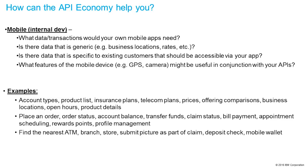When we think about customer-specific information, it might be placing an order — what is the order status? Or what's their account balance at the bank, and do they want to transfer funds? All these things have to do with individual customers, and we need to qualify who they are, secure that, and make sure they're only seeing their own information. Using the mobile device with the APIs, we might find the nearest ATM using GPS coordinates from the phone, or the nearest branch or store. If it's insurance, maybe we submit a picture of a car accident for a claim, or deposit a check. And mobile wallet for payments is another big area.